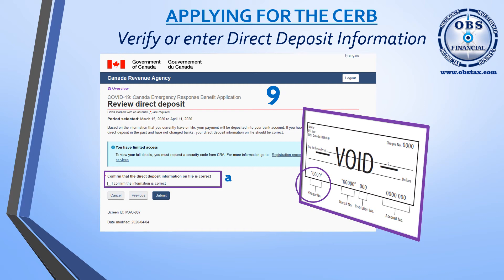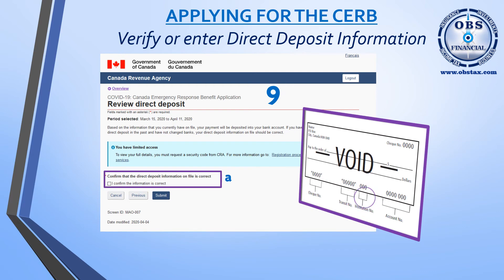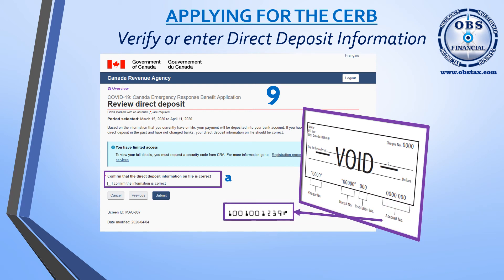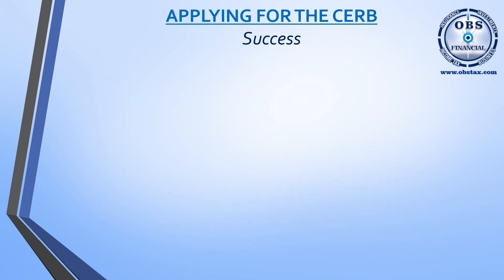The next five digits are your transit or branch number, which indicates where your bank is located. After that is your institution number — that identifies what bank you deal with. Last but not least is a series of digits at the end: bank account numbers can be anywhere from 5 to 12 numbers. Make sure you include all of the numbers, including any preceding ones or zeros. Once you've entered everything in, you can hit Submit and your application has now been processed.